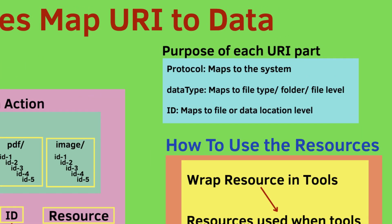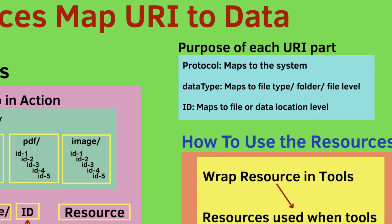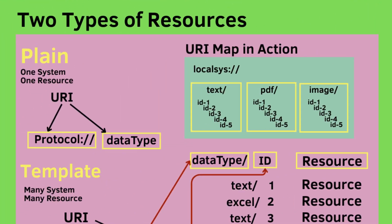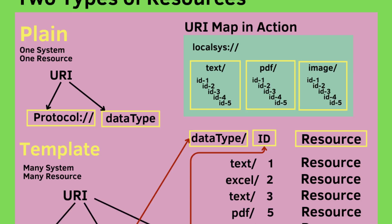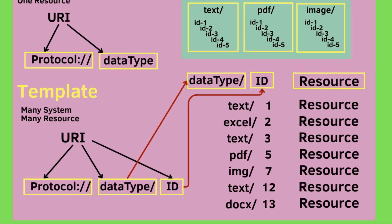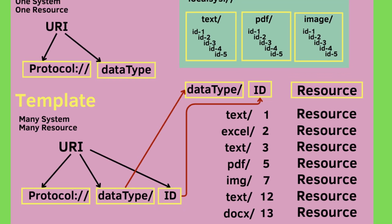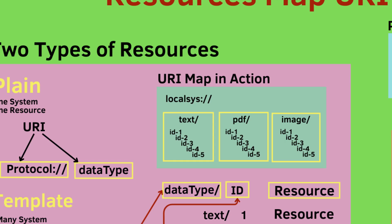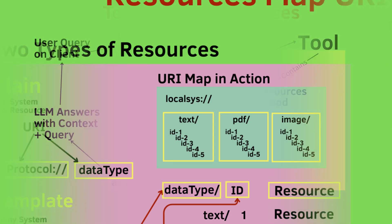The purpose of the URI is to act as an ID to the data. We have two types of resources: plain resources, which do not have curly braces in the URI, and template resources, which do. Inside the curly braces, the ID can be changed, allowing different resources to be accessed.